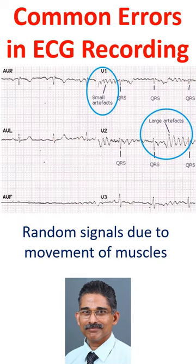Errors due to picking up of electrical activity from the muscles can occur in those who are restless or anxious and having tremors. This can be taken care of by pacifying, and occasionally by using sedation if unavoidable, especially in case of children.